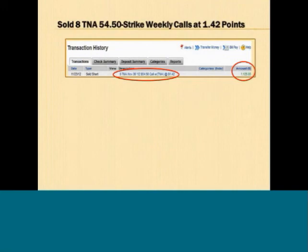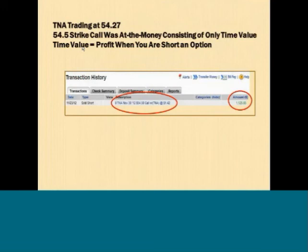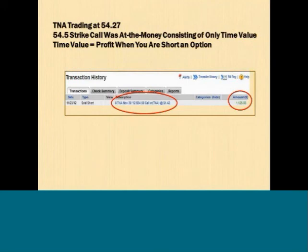Here's the fill for that particular spread trade. I was able to sell eight of the November 30th weekly calls at $1.42 per contract, with TNA trading at $54.27, selling the $54.50 strike — an at-the-money strike. Options lose all of their time value at option expiration. So if I sell a weekly call option with 1.42 points of time value, that time value decays to zero at expiration one week later. If I'm short that option, it becomes profit one week later, regardless of the price movement of the underlying stock or ETF.